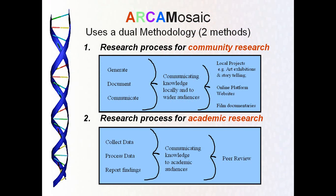The academic aspect of the research depends on having a qualified researcher — this could be a member of the community or someone who becomes part of the project in some other way. The research process is much the same: generate, document, and communicate. In this case, that means collect data, process data, and report findings. Collecting data in the Arco-Mosaic involved filming discussions and using images, artwork, poetry, and so on as data.